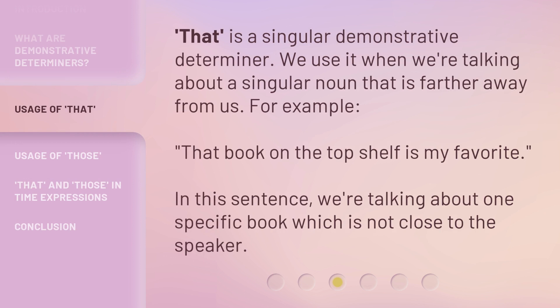That is a singular demonstrative determiner. We use it when we're talking about a singular noun that is farther away from us. For example, that book on the top shelf is my favorite. In this sentence, we're talking about one specific book which is not close to the speaker.